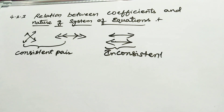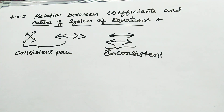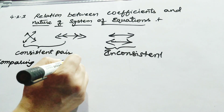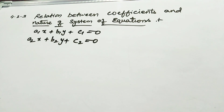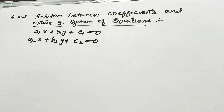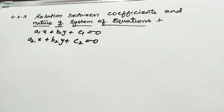For that, you have one technique called the comparing ratios technique. There should be a relation between the coefficients and the nature of the system of equations, and you have to use this comparing ratios technique. So without drawing the graph, by seeing any equation, you have to determine whether that equation has a unique solution, is a consistent pair, is dependent or coincident, or is an inconsistent one.